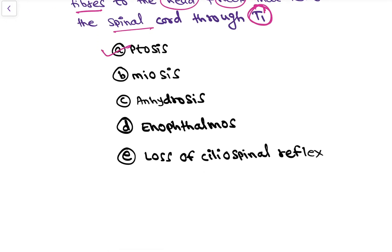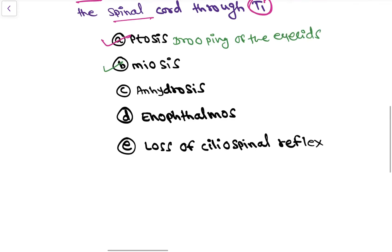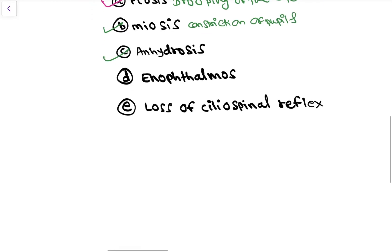So what are the characteristics of Horner's syndrome? First one is ptosis, that is drooping of the eyelids. Then miosis - miosis is constriction of pupil. Anhydrosis - anhydrosis is loss of sweating. Enophthalmos means there is sinking of eyeball, and loss of ciliospinal reflex.